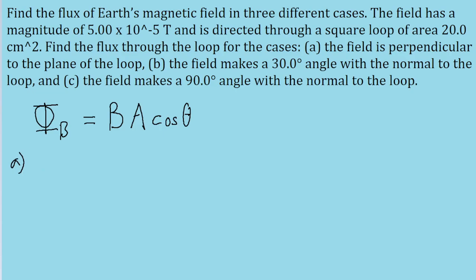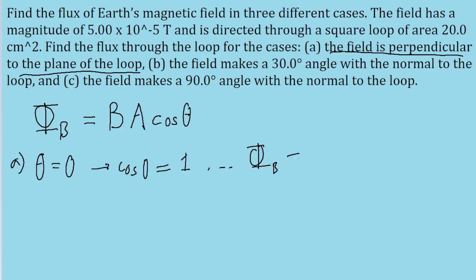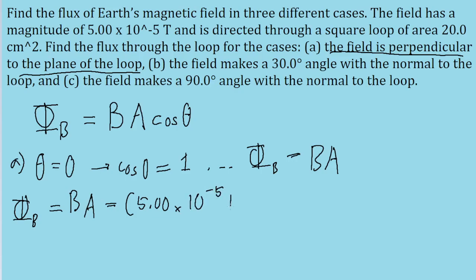Part A of the problem asks specifically about the case where the field is perpendicular to the plane of the loop, so it's referring to the case where theta is equal to zero. There is no angle. And since the cosine of zero is equal to one, that means that for Part A, the flux is just equal to the magnitude of the magnetic field multiplied by the surface area. So let's plug in the values: the magnitude of the field is 5.00 times 10 to the power of negative 5 teslas.